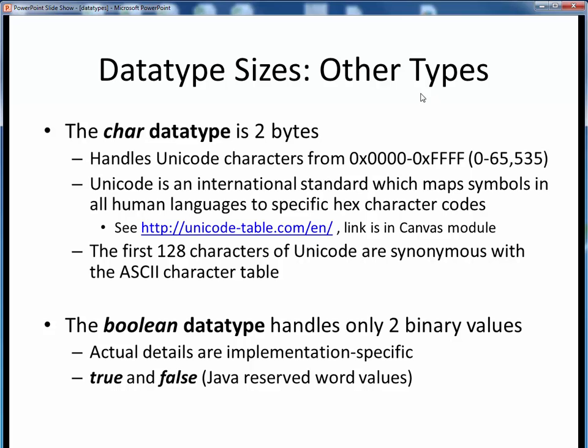As far as Java's other two non-numeric data types go, the char data type is two bytes. It stores Unicode characters from hex 0 to hex FFFF, or roughly 65,000 different characters. As a reminder, Unicode is the international standard which assigns individual character codes to the letters and symbols found in all human languages. Amazingly enough, English is not the only language spoken in the world, and Java was designed from its inception with such internationalization in mind.